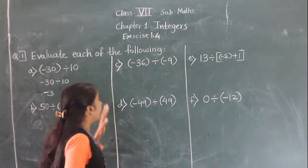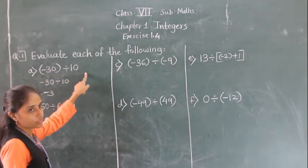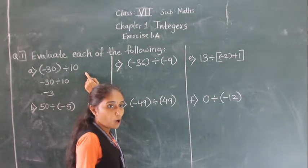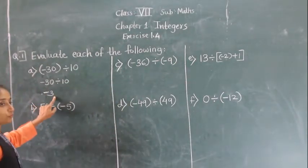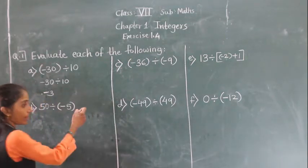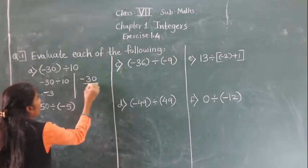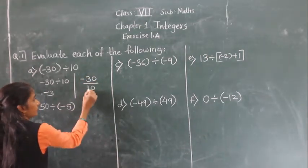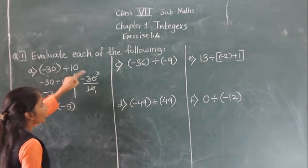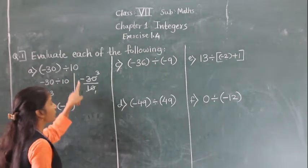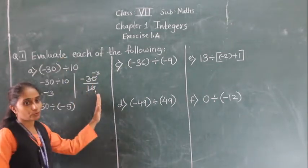We have learned this rule: when we divide a negative integer by a positive integer, we divide them as whole numbers and then put a minus sign before the answer. So minus 30 divided by 10 equals minus 3.